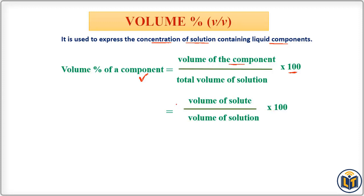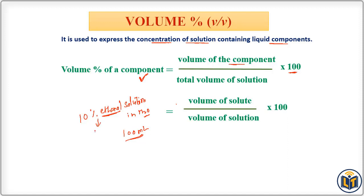For example, consider a 10 percent ethanol solution in water. Ethanol is in liquid state and water is also in liquid state, which means the total volume of the solution is 100 ml. Since we have 10 percent ethanol, that gives us 10 ml of ethanol.